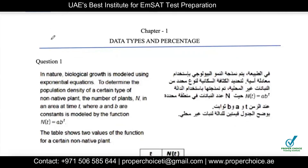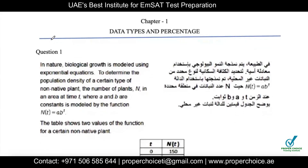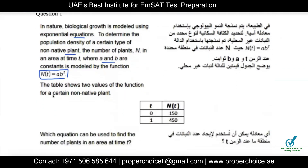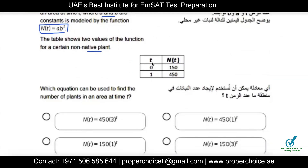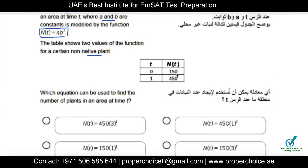Here are a few sample questions taken from MSAT sample papers. The first question says: in nature, biological growth is modeled using exponential equations. To determine the population density of a certain type of non-native plant, the number of plants N in an area at time t — where A and B are constants — is modeled by a given function. The table shows two values of the function for certain non-native plants.